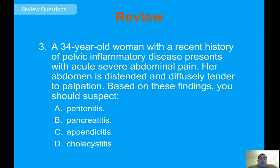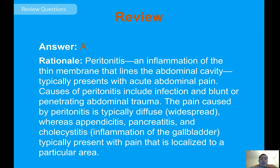Review question: a 34-year-old woman with a recent history of pelvic inflammatory disease presents with acute severe abdominal pain. Her abdomen is distended and diffusely tender to palpation. Based on these findings, you should suspect peritonitis — inflammation of the thin membrane lining the abdominal cavity. Causes include infection and blunt or penetrating trauma. Unlike appendicitis, pancreatitis, or cholecystitis, peritonitis typically presents with diffuse widespread pain rather than pain localized to one area.